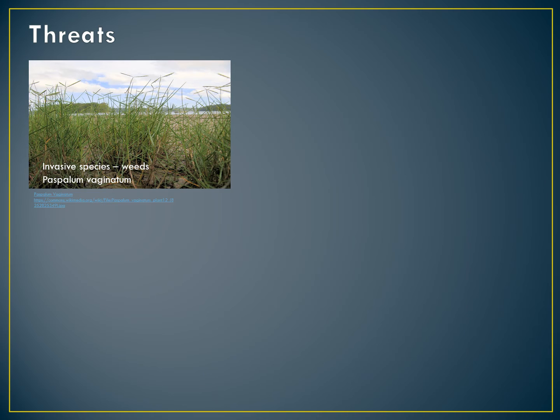A variety of threats impacts the health and success of salt marshes. There are ecological threats such as invasive weed species, which can harm salt marsh vegetation. A common weed found in salt marsh areas is Paspalum vaginatum, also known as weedy saltwater couch. This species is known for its ability to form dense mats, which affects the abundance and growth of salt marsh species and the structure, production and nutrient dynamics of salt marshes.